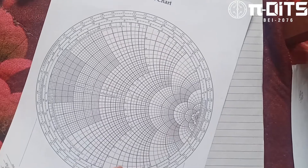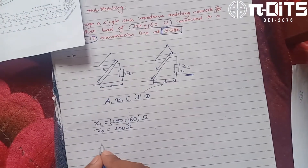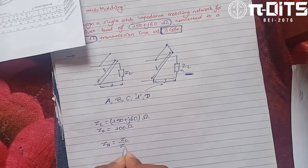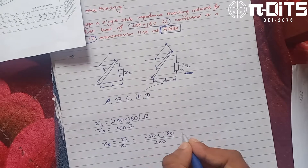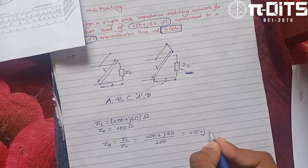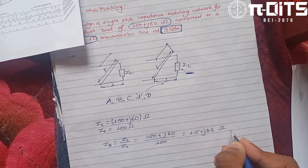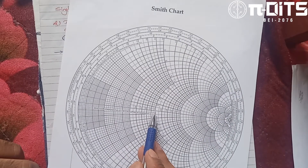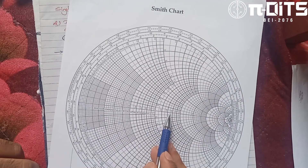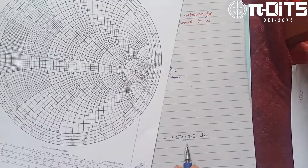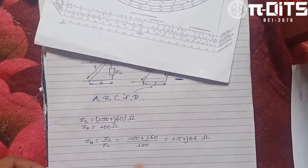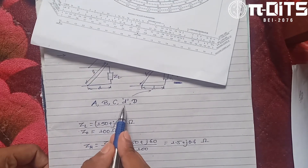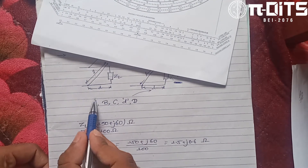First, we normalize the load impedance. Zn equals Zl divided by Z0, which is 150 plus j60 divided by 100. This gives us 1.5 plus j0.6. We will now plot points a, b, c, small d, and capital D on the Smith chart.